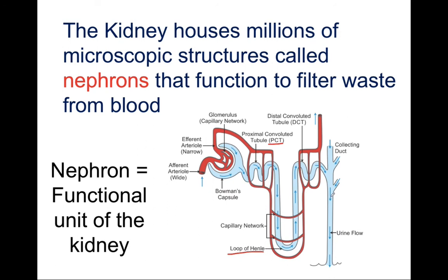These are the primary structures composing the nephron, but there are other components to consider. The glomerulus is another extremely important component that facilitates filtration of blood in the kidneys. At this microscopic level, we start with the afferent arteriole — the A in afferent stands for arrive, so an afferent structure brings substances to another structure. The afferent arteriole directs blood into the tiny capillary bed known as the glomerulus. Then the efferent arteriole — E for exit — takes substances away from the glomerulus into the peritubular capillaries.